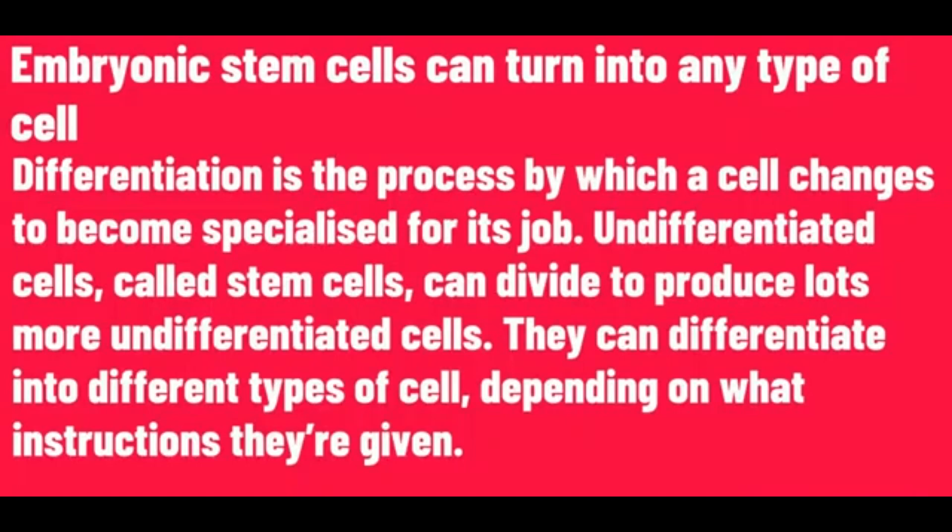Undifferentiated cells, called stem cells, can divide to produce lots more undifferentiated cells. They can differentiate into different types of cell.